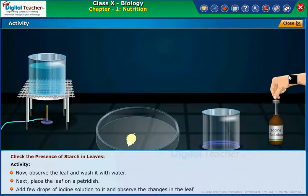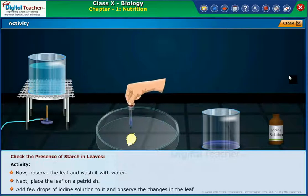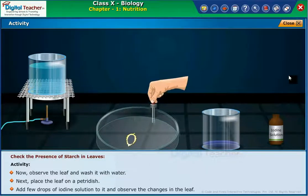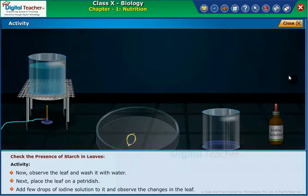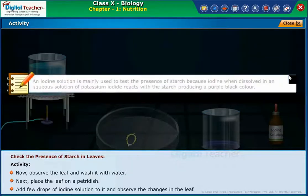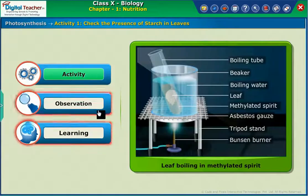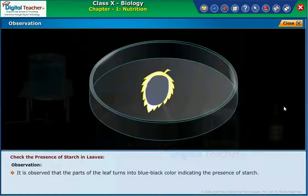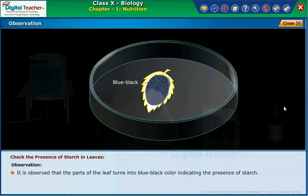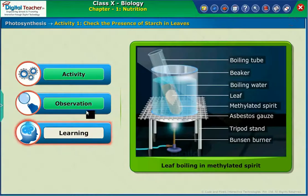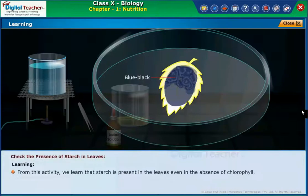Add a few drops of iodine solution to it and observe the changes in the leaf. It is observed that the parts of the leaf turn into a blue-black color, indicating the presence of starch. From this activity, we learn that starch is present in the leaves, even in the absence of chlorophyll.